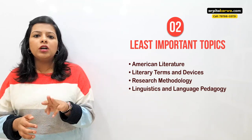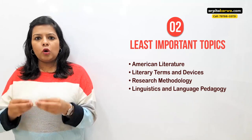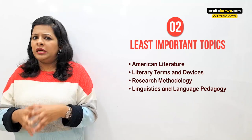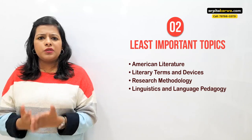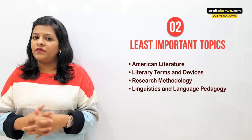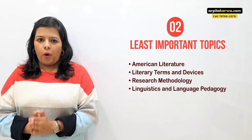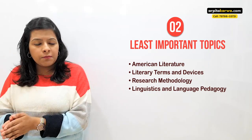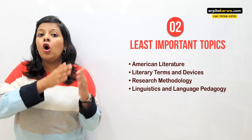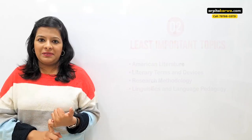The third portion to consider skipping is linguistics and research. Even though they are newly added to the syllabus, they are not focusing too much on these areas — you can expect only two to three questions from each on exam day, which is a relatively small portion. If you skip these three portions — American literature, literary terms and devices, and linguistics and research — you will save a lot of time, which you can invest in British literature, literary theory, and criticism.